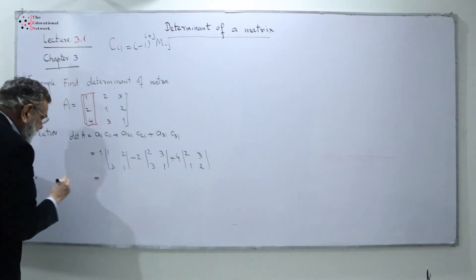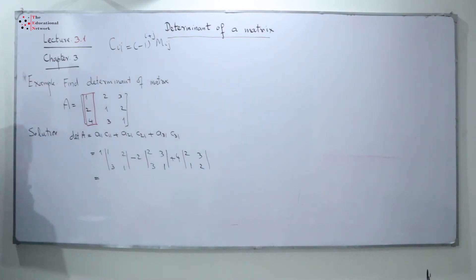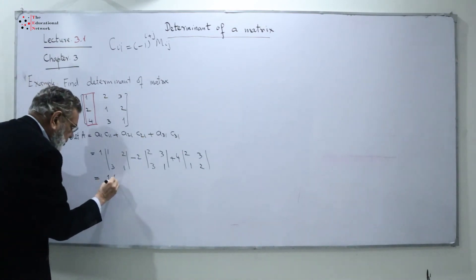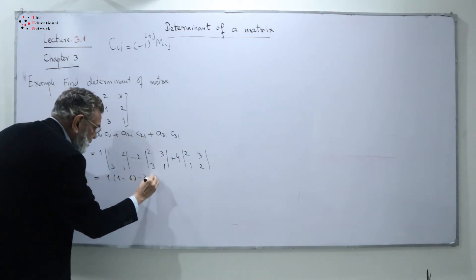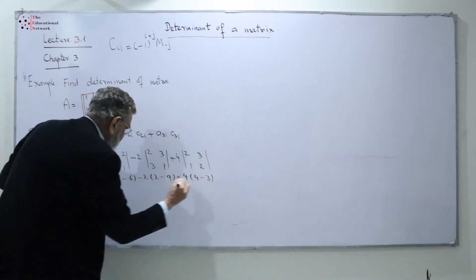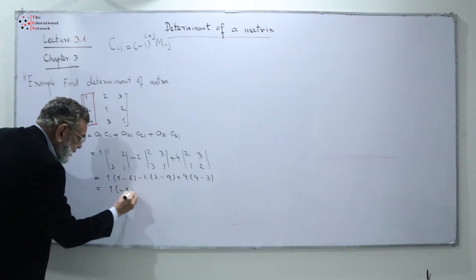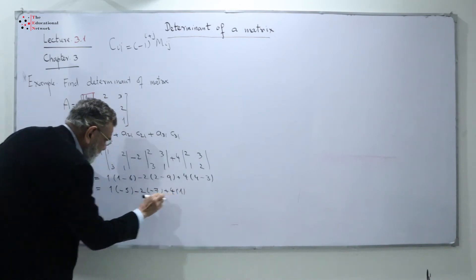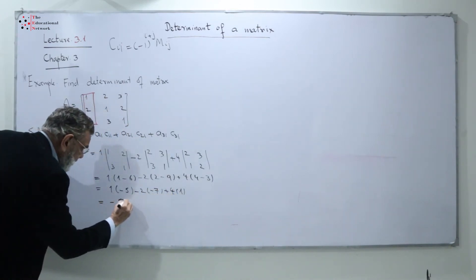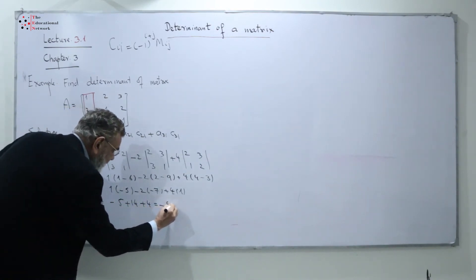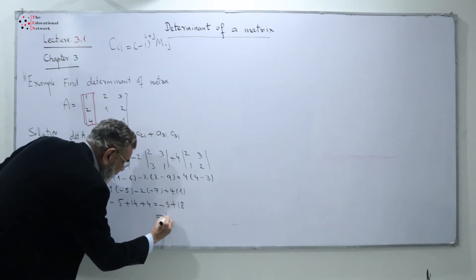Now I solve each 2x2 determinant using the diagonal rule — main diagonals with plus sign, anti-diagonals with minus sign. I get: 1 times (1−6), minus 2 times (2−9), plus 4 times (4−3). Simplifying: 1 times (−5) plus (−2) times (−7) plus 4 times 1 equals −5 + 14 + 4, which gives minus 5 plus 18. The value of the determinant equals 13.